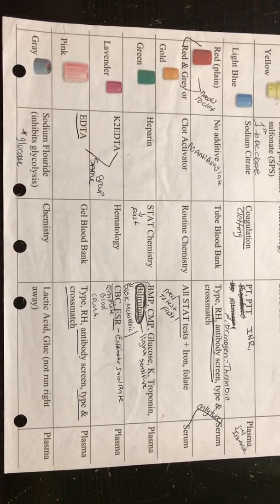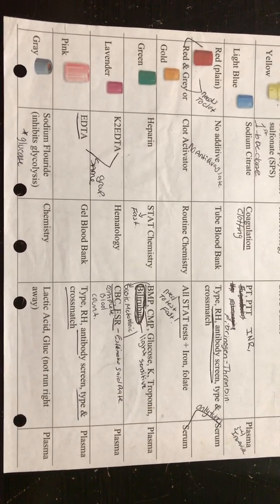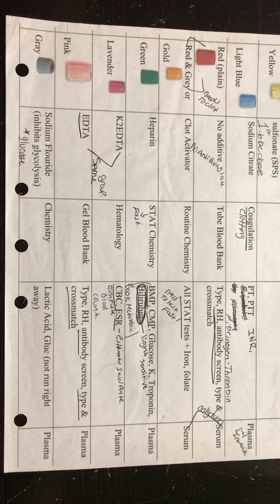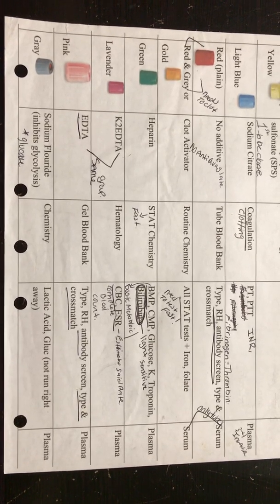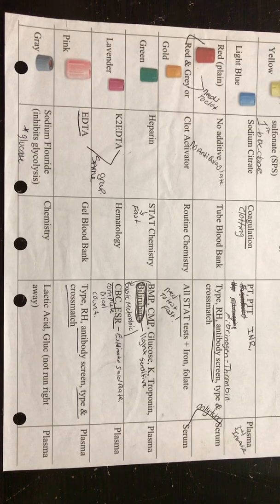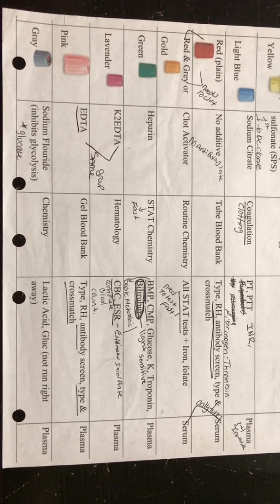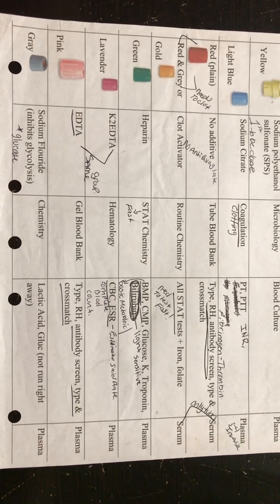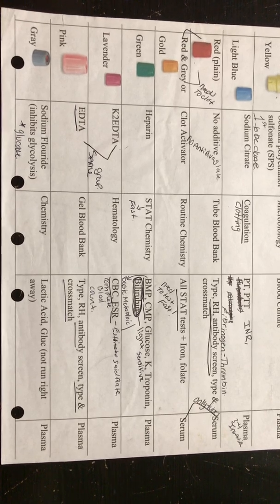Then we have our gray, which is at the end. Gray, I want you to remember lactic acid is one that you'll see, and glucose. Go ahead and finish out that wordage for glucose. I want you to think gray glucose. There's another tube that glucose can go in, but it is for a fast glucose. Normally you're not going to just run and do a glucose blood. You can do a finger stick for that to be fast.